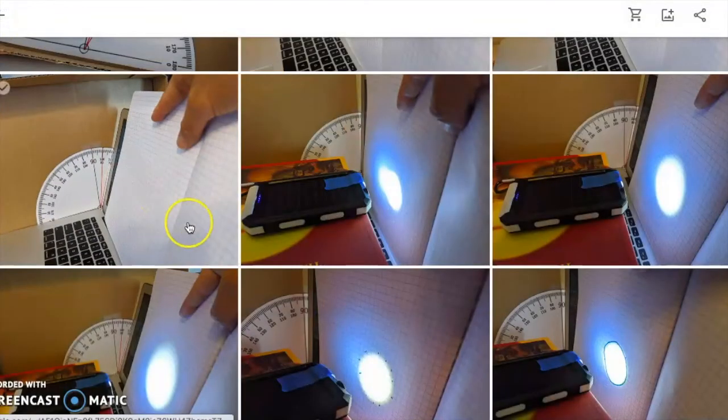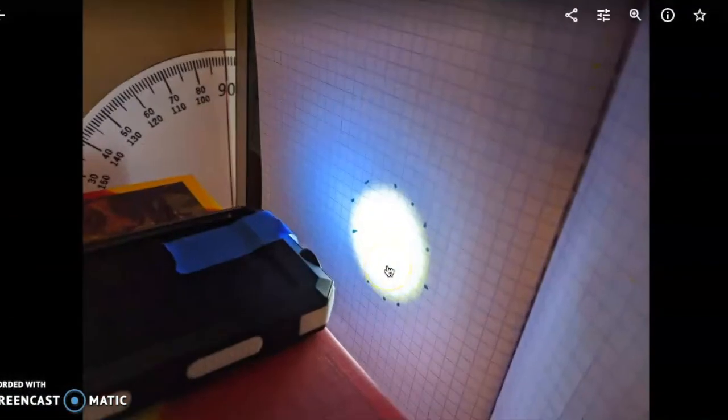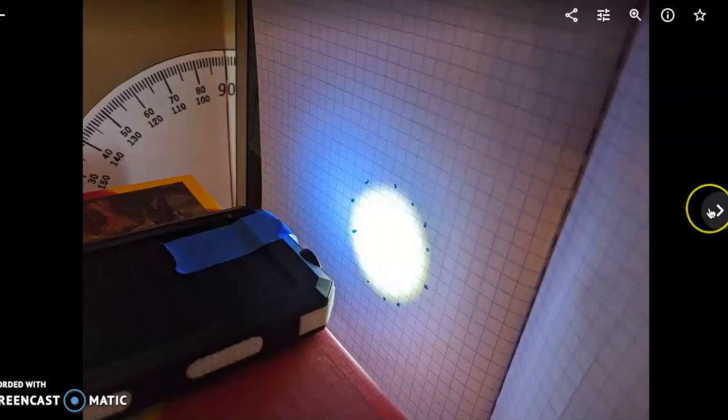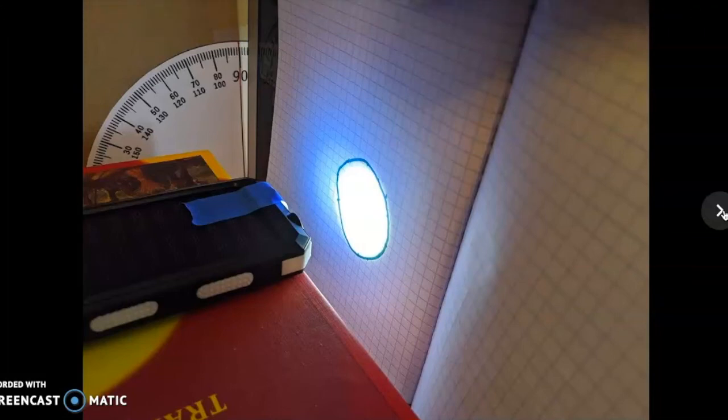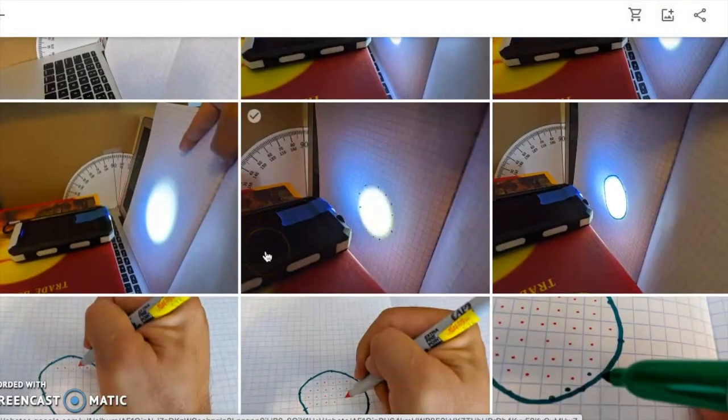All right, so once I did that, then I was able to start my experiments. So the first step I did was make an outline of the light. You know, it's kind of difficult to take that pen and make a nice circle, so I just made some dots around the circle. And then I took my notebook off of the laptop, and then I was able to fill in the rest of the circle, and then it would look like this - just verifying that I can make a nice circumference around the size of the light that's hitting the graph paper.